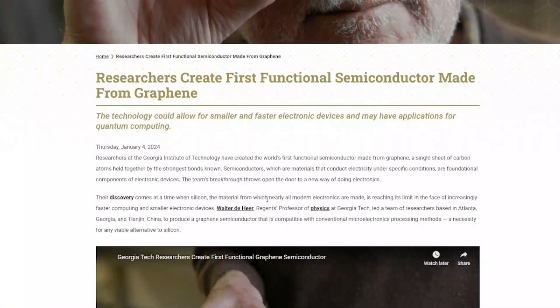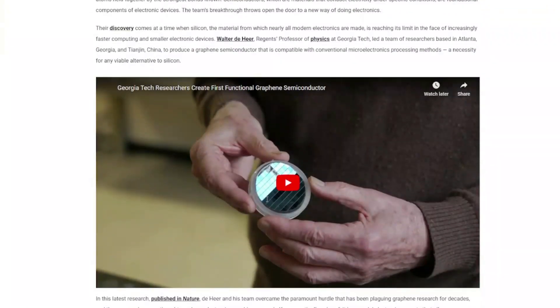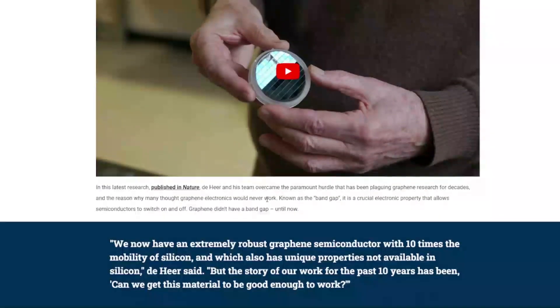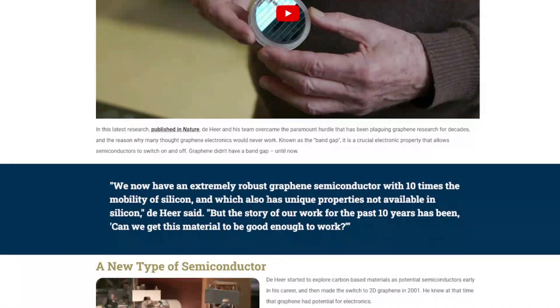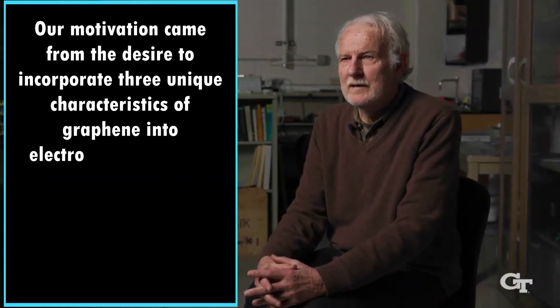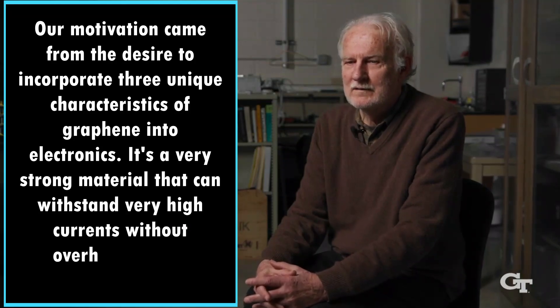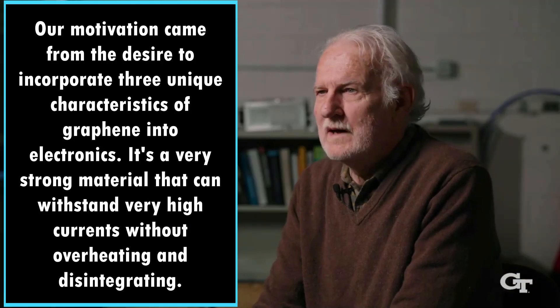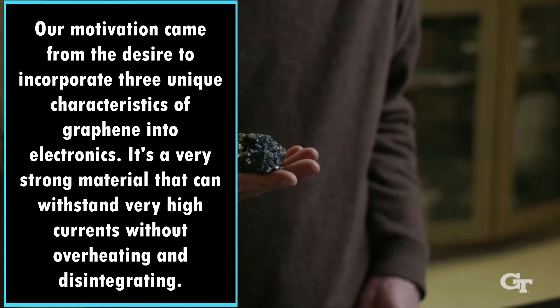Earlier in his career, DeHeer began investigating carbon-based materials as possible semiconductors. In 2001, he switched his focus to two-dimensional graphene research. At the time, he was aware of graphene's potential in electronics. Our motivation came from the desire to incorporate three unique characteristics of graphene into electronics, he stated.